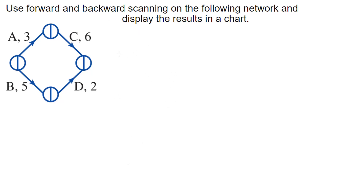In this video we're looking at an example where we're asked to use forward and backward scanning to analyze a network and display the results in a chart — which just means a table. We're first going to do the forward scanning, which works out the earliest start time of each activity, then the backward scanning, which works out the latest start time for each activity.